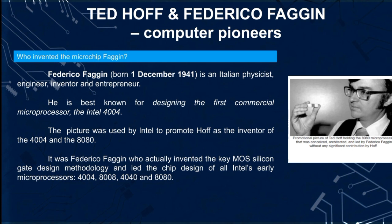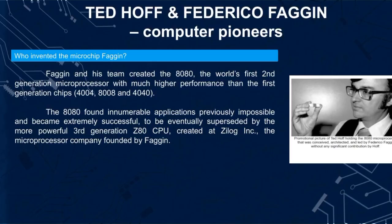It was Federico Faggin who actually invented the CMOS silicon gate design methodology and led the chip design of all Intel's early microprocessors: the 4004, 8008, 4040, and 8080. His team created what became a highly successful second-generation microprocessor with much higher performance than the first-generation chips. The 8080 founded innumerable applications previously impossible, and was eventually superseded by the more powerful third-generation Z80 CPU, created at Zilog Inc., the microprocessor company founded by Faggin.